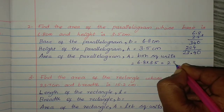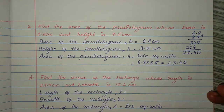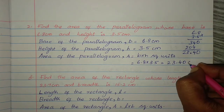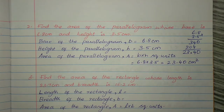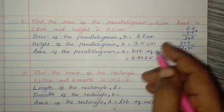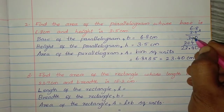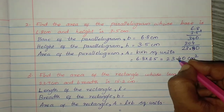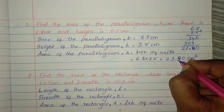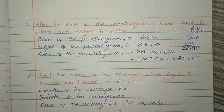Answer is 23.40. Wait — 4 plus 4 = 8. So the area of the parallelogram is 23.80 cm square.